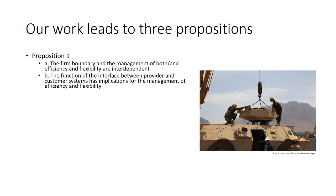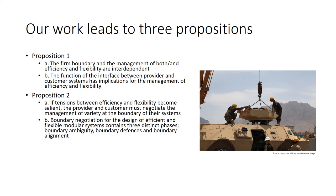Our work leads to three propositions. The first is that the firm boundary and the management of both efficiency and flexibility are interdependent — the interface between a provider and customer has implications for the ability to manage efficiency and flexibility. The second proposition is that if tensions between efficiency and flexibility become salient and you're faced with a paradox, the provider and customer must negotiate the management of variety at the boundary of their systems. Boundary negotiation for the design of efficient and flexible modular systems contains three distinct phases: boundary ambiguity, boundary defence, and boundary alignment.